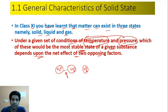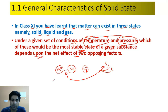यह force of attraction temperature और pressure की condition पे depends करता है, और इसी force of attraction की वजह से ये 3 states बनती हैं — solid, liquid, और gas। अगर यह force बहुत ज़्यादा strong हो, तो solid बन जाता है।